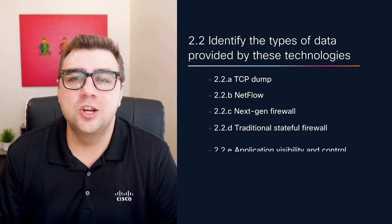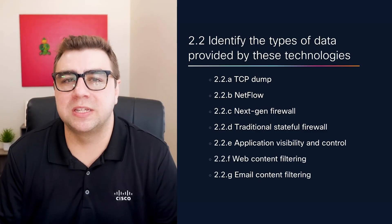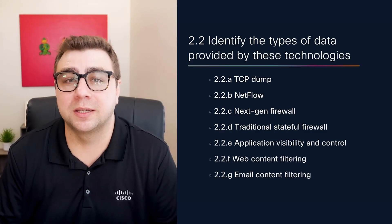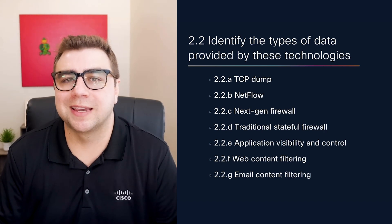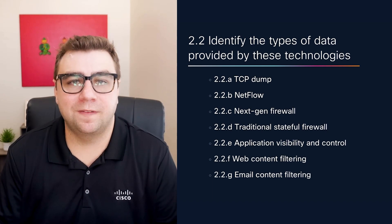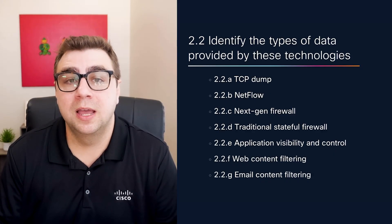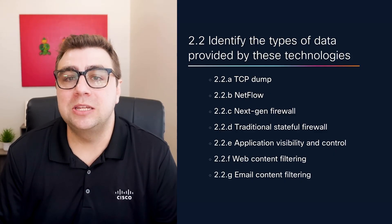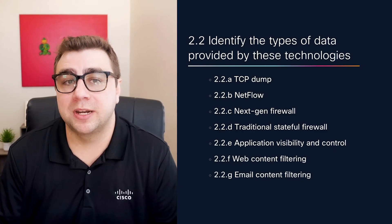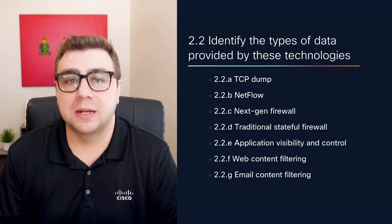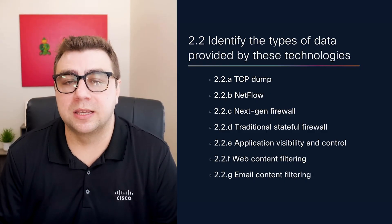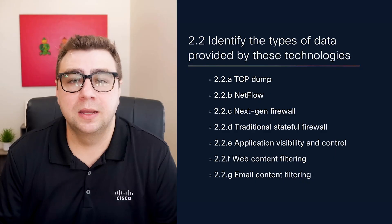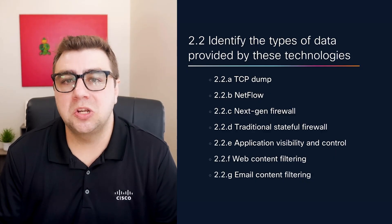Domain 2 is packed with questions about the different types of data we can collect and the tools we use to collect it. You'll want to be familiar with technologies like TCP dump, NetFlow, next-gen firewalls, traditional stateful firewalls, application visibility and control, and web and email content filtering. Each of these provides different insights into what's happening on your network. For example, NetFlow gives you metadata about traffic flows — who's talking to who, for how long, and how much data is moving. TCP dump, on the other hand, captures actual packets. The key is knowing what type of visibility each tool gives you and when you'd use it.